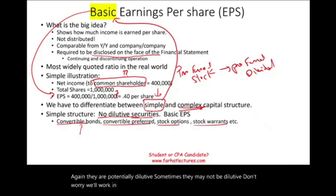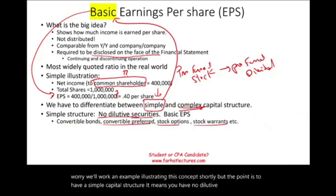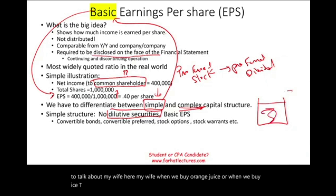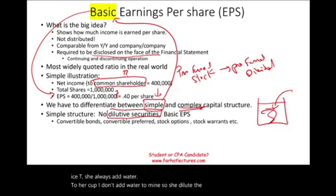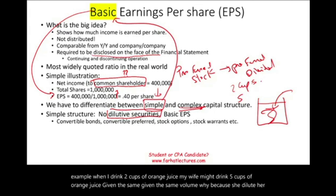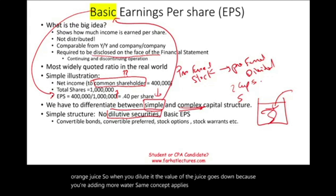We'll work an example illustrating this concept shortly. What is dilutive? I'll give you an example. My wife, when we buy orange juice or iced tea, she always adds water to her cup — I don't. So she dilutes the sugar effect. When I drink two cups of orange juice, my wife might drink five cups given the same volume, because she dilutes her orange juice. When you dilute it, the value of the juice goes down because you're adding more water. Same concept applies to earnings per share: when you add more common stock to the denominator, earnings per share will go down.